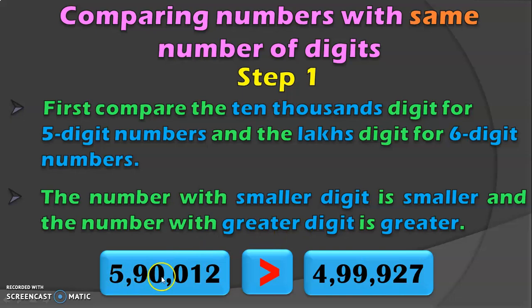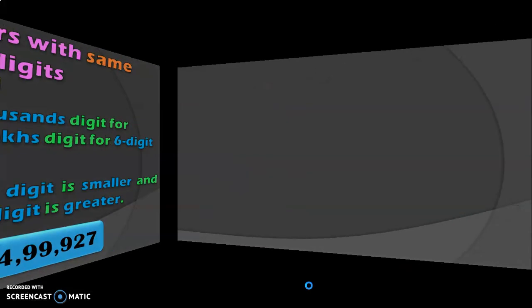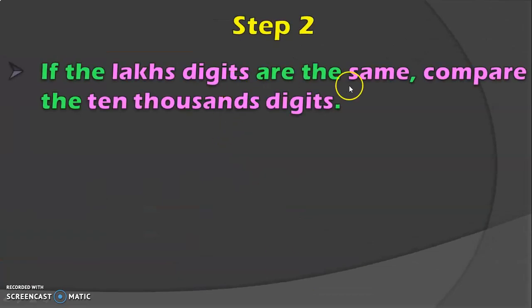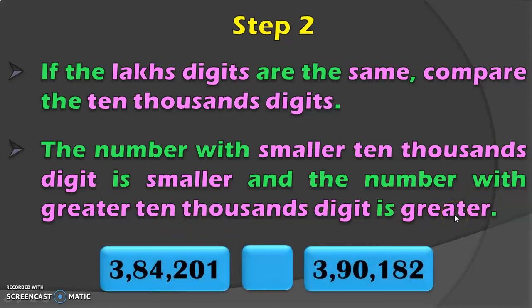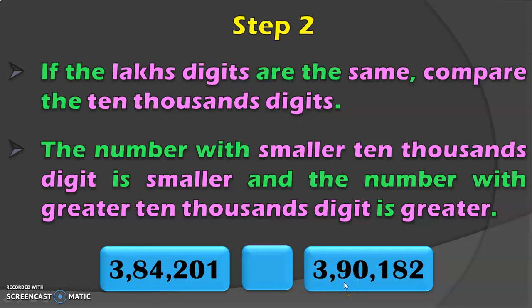Suppose both numbers have the same digit in the lakhs place. In such cases, compare the next place value which is the 10,000th digit. The number with the smaller 10,000th digit is smaller and the number with the greater 10,000th digit is greater. For example, 3,84,201 and 3,90,182 both have the same lakhs digit, so we look at the 10,000th place where we have 8 and 9. Since 8 is lesser than 9, we conclude 3,84,201 is lesser than 3,90,182.